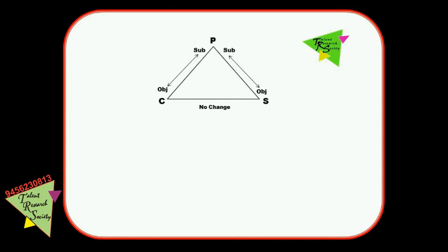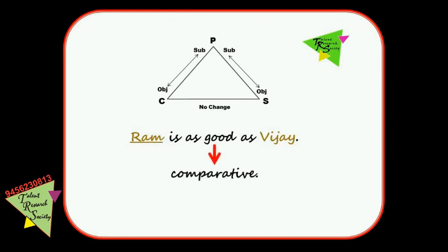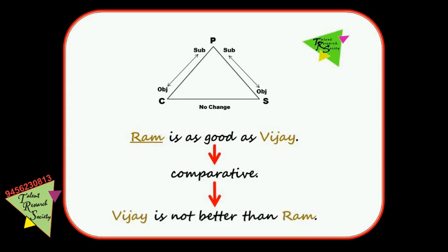For example, 'Ram is as good as Vijay' — we will move this to comparative. Since subject is Ram and object is Vijay, the comparative rule will be applied accordingly.